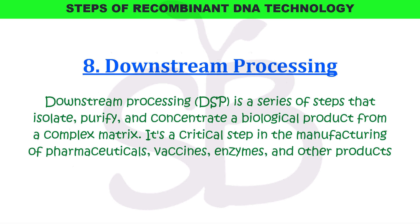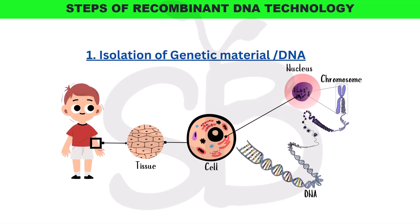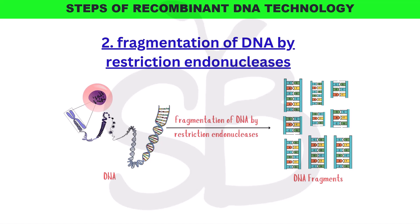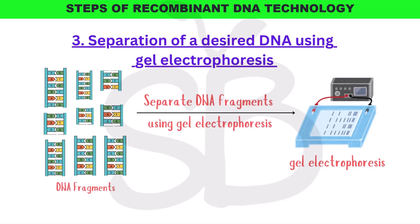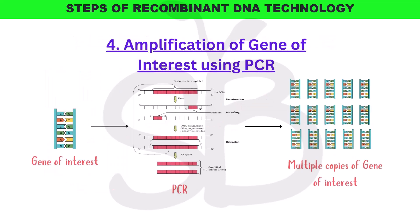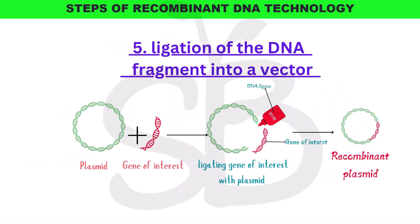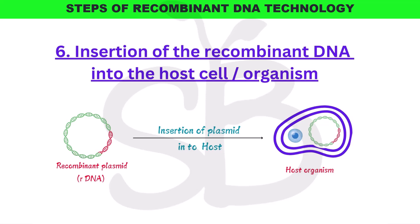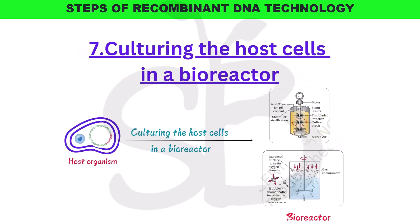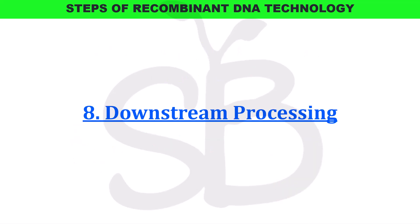To summarize, the steps of recombinant DNA technology are: isolation of genetic material or DNA; cutting or fragmentation of DNA at specific locations; separation of desired DNA using gel electrophoresis; amplification of gene of interest using PCR; ligation of DNA fragments into a vector; insertion of recombinant DNA into the host cell or organism; culturing of host cells; and finally, downstream processing.